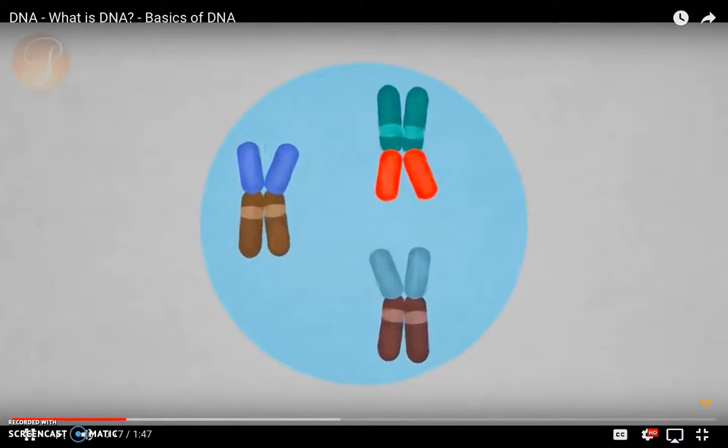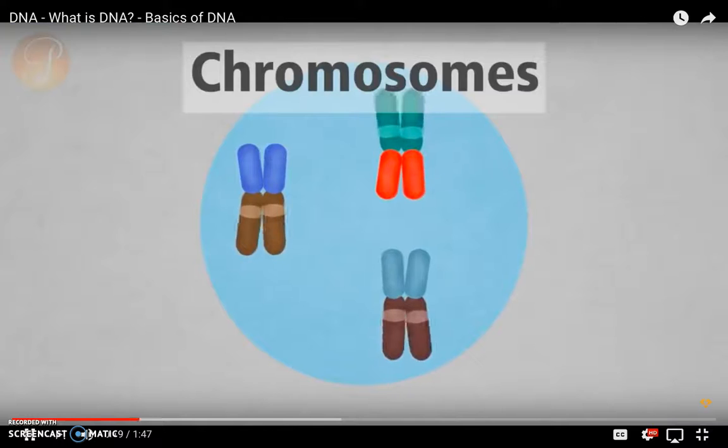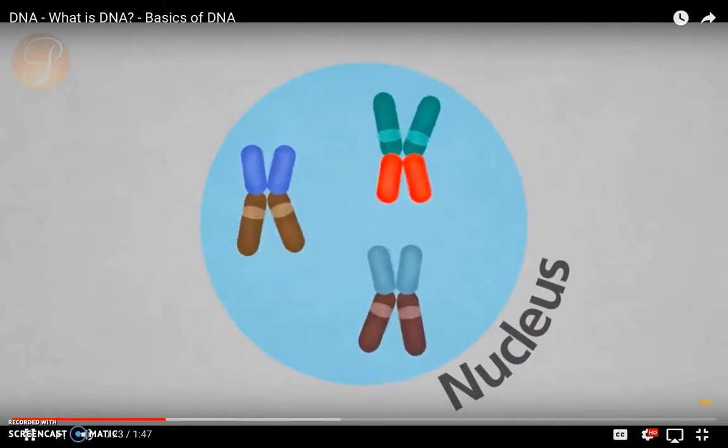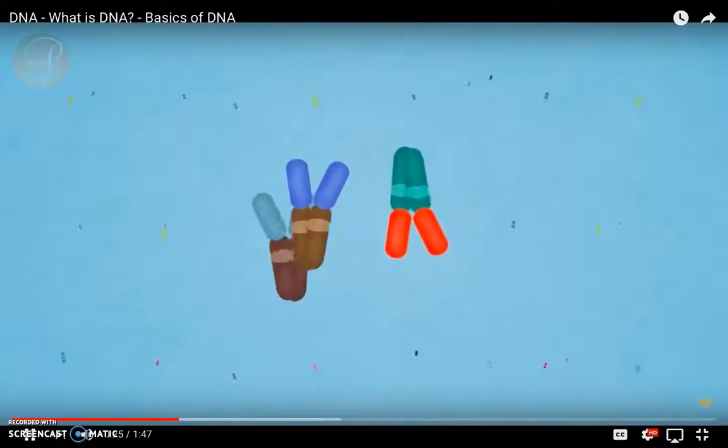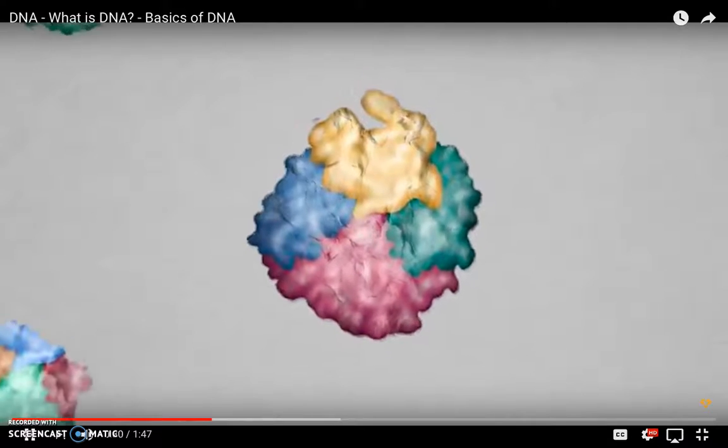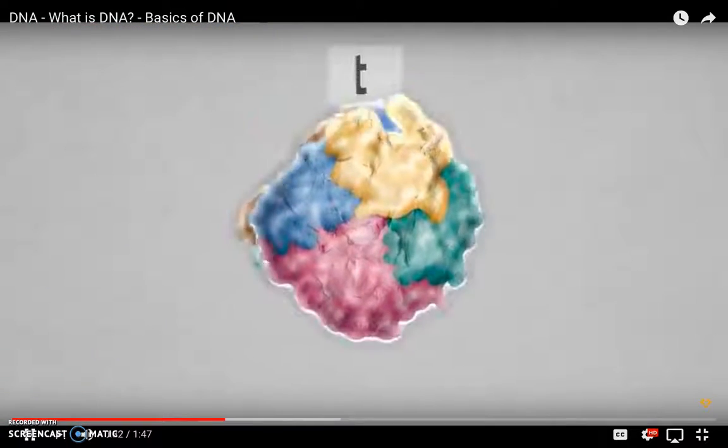DNA folds itself into paired packages called chromosomes, which are stored in a nucleus of cells. Each species has a different number of chromosomes. Humans have 46 chromosomes, which contain our genes. Genes act as instructions for molecules called proteins.